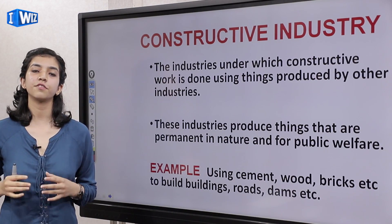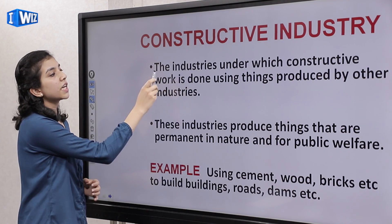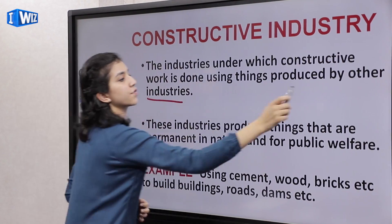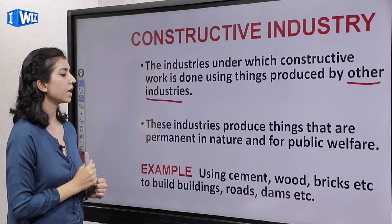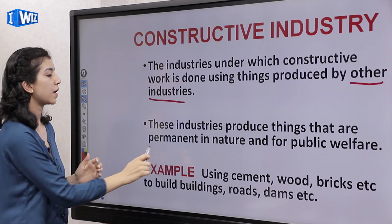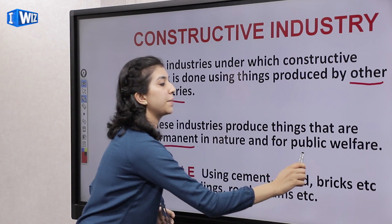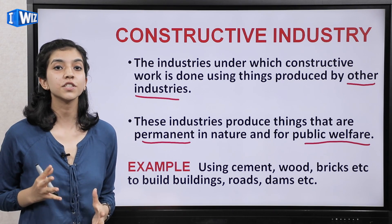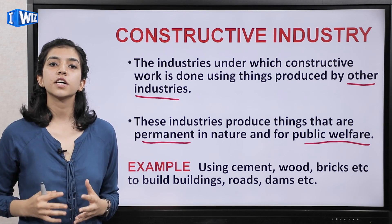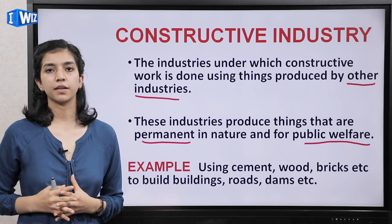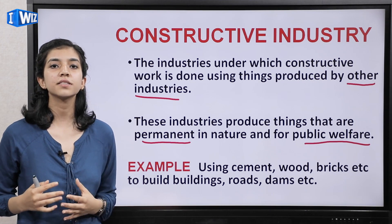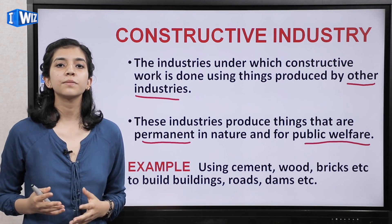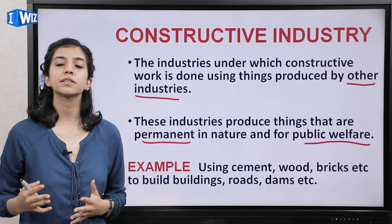Now comes the question of constructive industries — those industries under which constructive work is done using things produced by other industries. These industries produce things which are permanent in nature and for public welfare. Constructive industries produce goods for public welfare in large amounts. For example, roads, bridges etc. — these are created for public welfare using materials like cement, bricks etc.